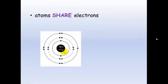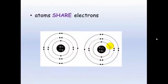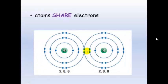Here we have chlorine which has got 17 protons and 17 electrons, and another chlorine atom which also has 17 protons and 17 electrons. Both of them have got 7 valence electrons, so what happens when they meet up? They share these 2 electrons to form a structure where each chlorine shares 1 electron from the other to give both a full outer shell of 8 electrons.